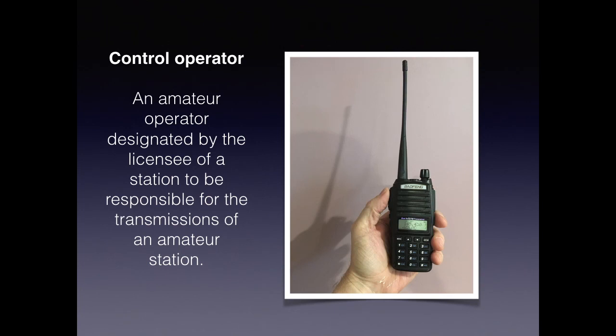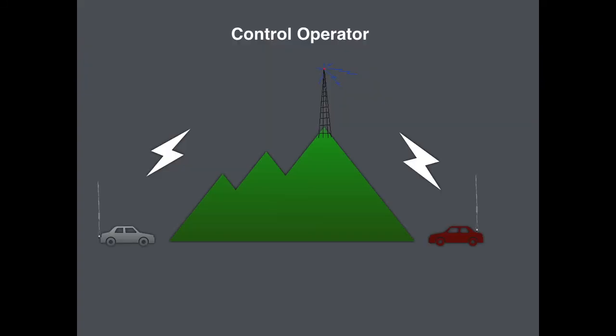We'll begin by defining what a control operator is. A control operator is basically the person that pushes the push-to-talk button or keys the transmitter. The true definition is an amateur operator designated by the licensee of a station to be responsible for the transmissions of the amateur station. In the case of repeater operation, there's nobody there, so the person that presses the key that keys the transmitter on the repeater is actually a control operator of the repeater.